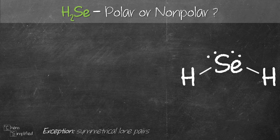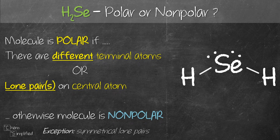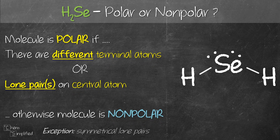We're going to figure out if H₂Se is polar or non-polar. To do that, we're going to use this simple trick to help us out. A molecule is basically polar if it fulfills either one of two criteria: the first is having a presence of different terminal atoms, and the second is the presence of lone pairs on the central atom.